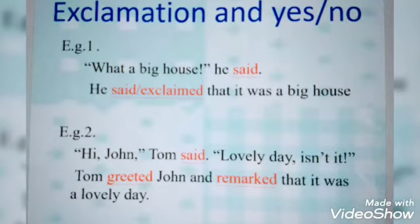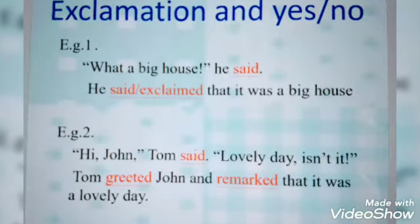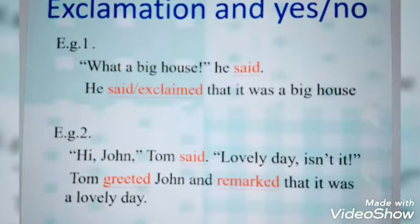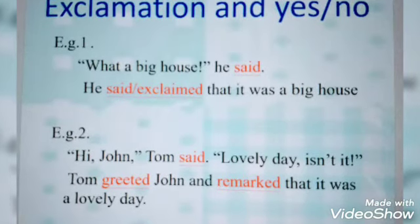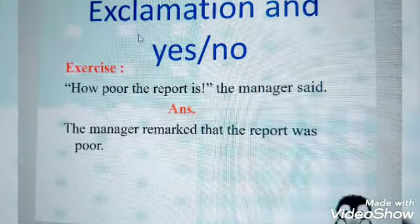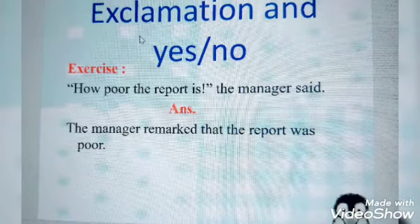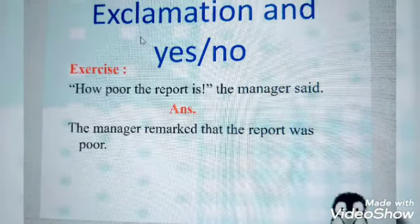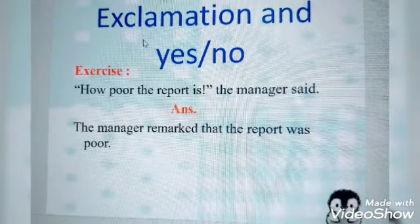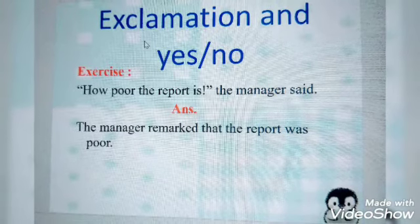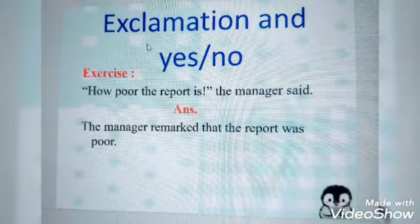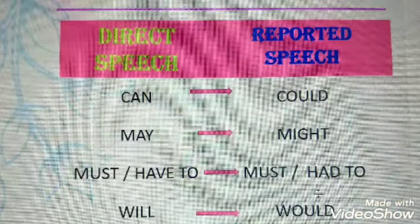For example: 'What a big house!' he said. In reported speech: He exclaimed that it was a big house. Notice that the exclamation mark is not used anywhere in the reported sentence. Another example: 'Hi John,' Tom said. 'Lovely day, isn't it?' In reported speech: Tom greeted John and remarked that it was a lovely day. A further example: 'How poor the report is!' the manager said. In reported speech: The manager remarked that the report was poor.